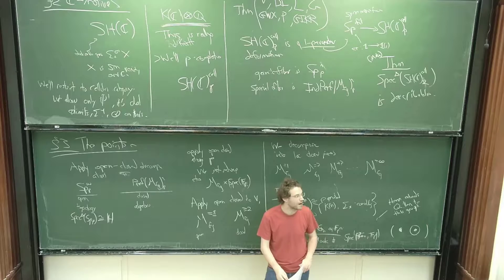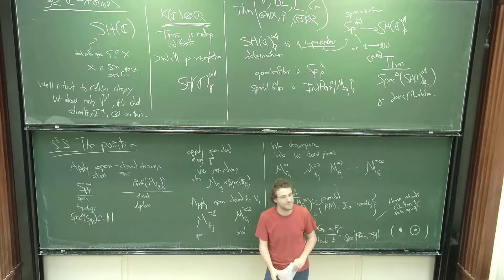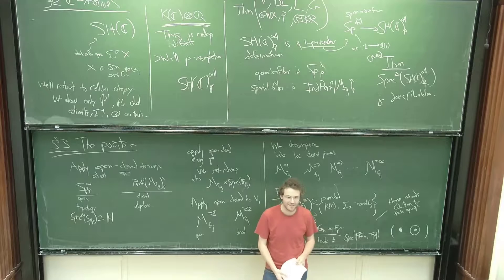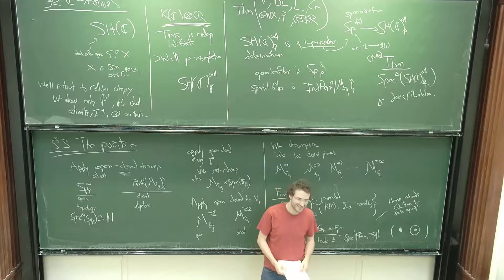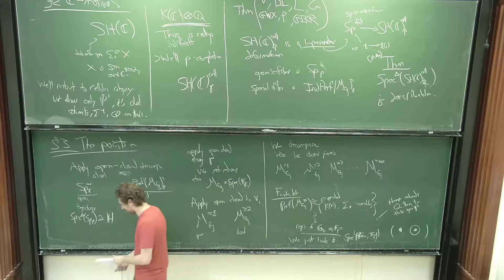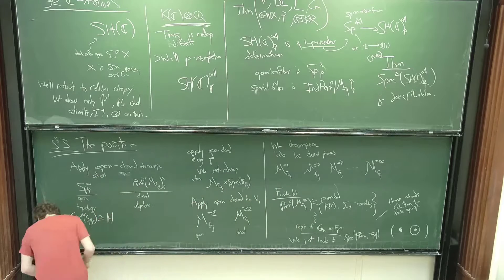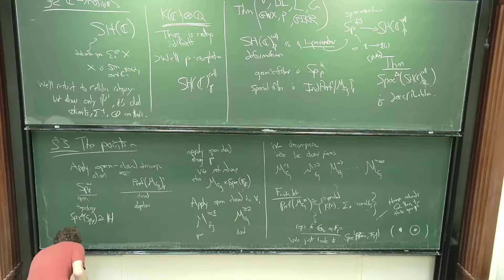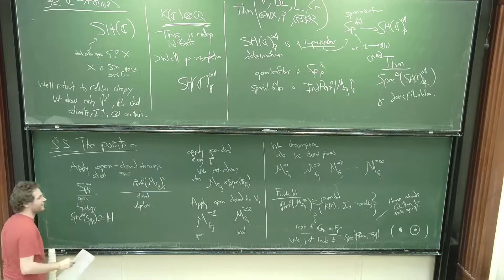Our argument will verbatim compute the Balmer spectrum of the moduli of formal Z_p[ζ_p]-modules. But that's kind of an instance of — nobody asked. Our result really is at the prime 2 and only the prime 2.